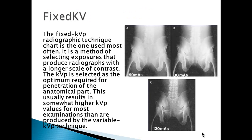The second type of technique chart is a fixed KV chart. Similar to the variable, the keyword here is fixed in that the KV will remain the same and the mAs in this case will change.